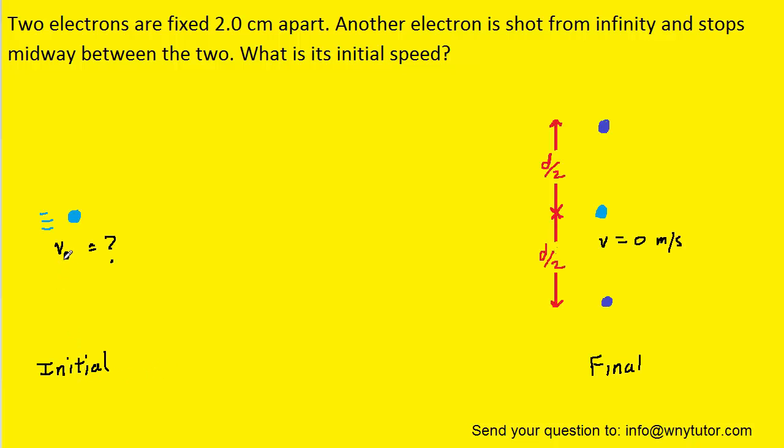Initially, an electron is fired and it's infinitely far away from the other two electrons. Because it's infinitely far away from the other two electrons, that means that the only energy present would be the kinetic energy. The electron then moves from infinity and ends up coming to rest directly between two other electrons.